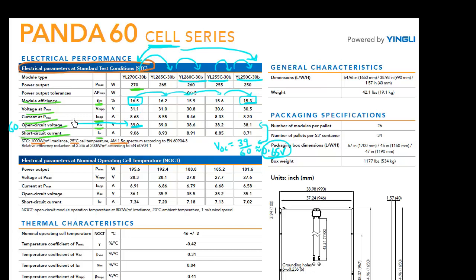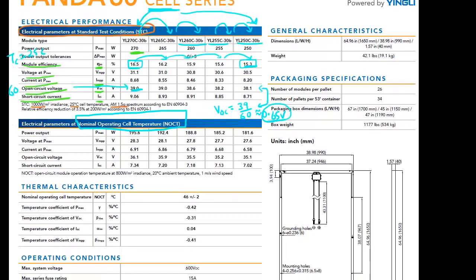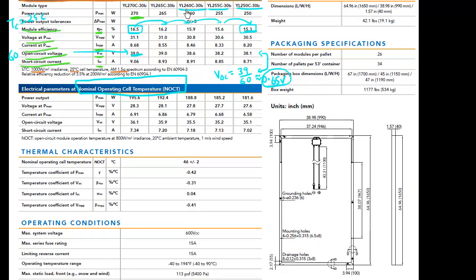So another thing to notice over here is some of these metrics are also reported for this nominal operating cell temperature. So these STC conditions, they correspond to a cell temperature of 25C. But there's also this nominal operating cell temperature. Which essentially is similar to the PTC condition. But it uses a radiance of 800 watt per meter squared instead of 1000 watt per meter squared. Again, 20 degree centigrade ambient, and one meter per second speed.